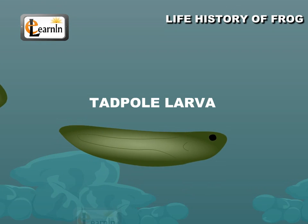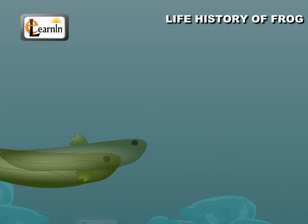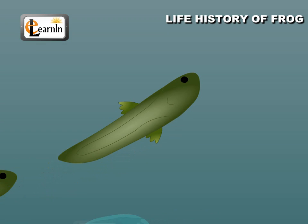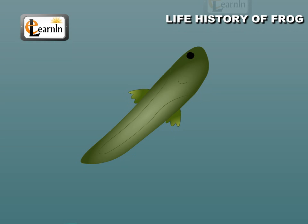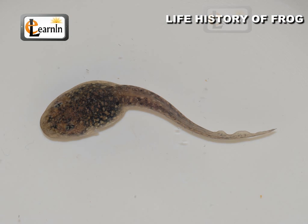The tadpole larva resembles a small fish. It develops a mouth, a third pair of external gills and a tail. The jaws have teeth. It feeds on plants. The intestine is coiled like a watch spring. The tail increases in size and helps in swimming.